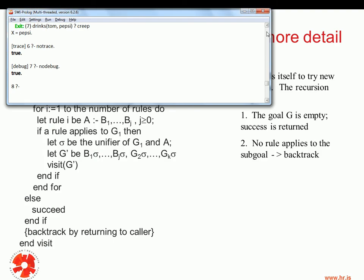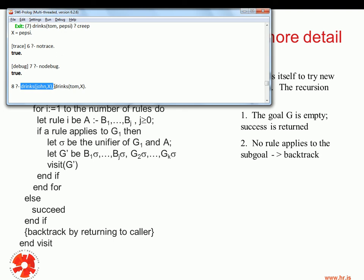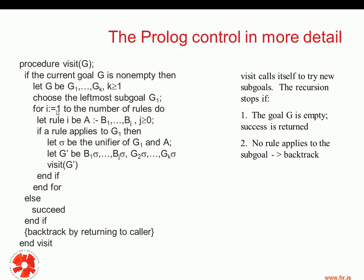In our previous example, this would be our G and we split it up into G1 and G2. We choose the leftmost sub-goal, G1. Then, for i equal to 1 up to the number of rules, this for-loop is used to go through all the rules that are applicable to the sub-goal G1.